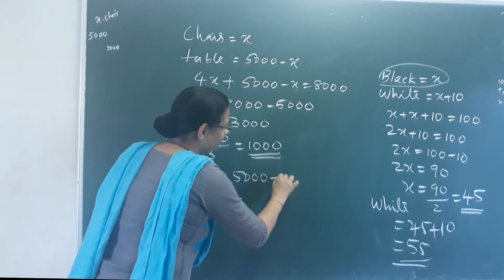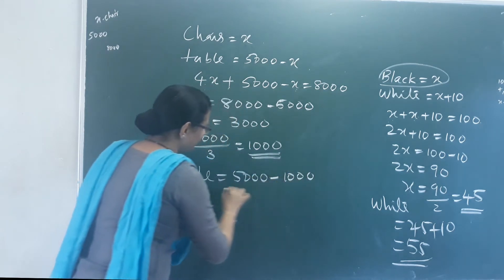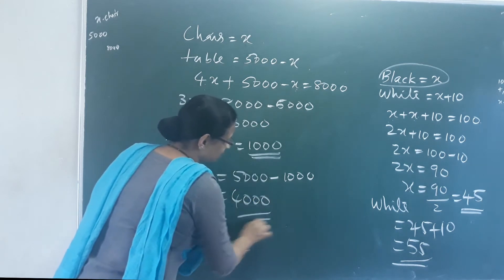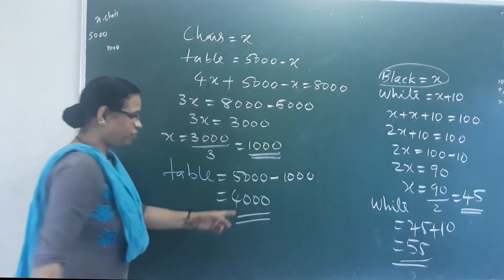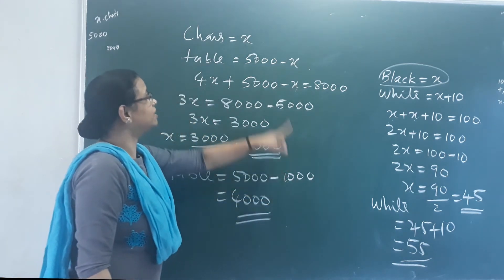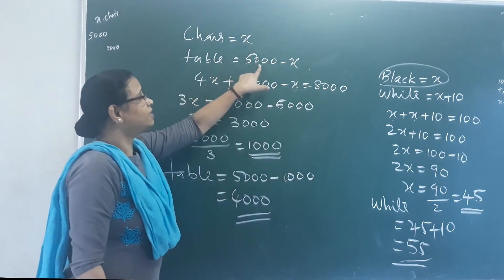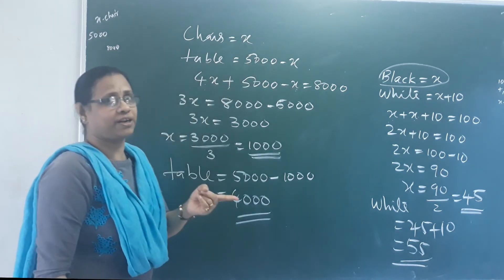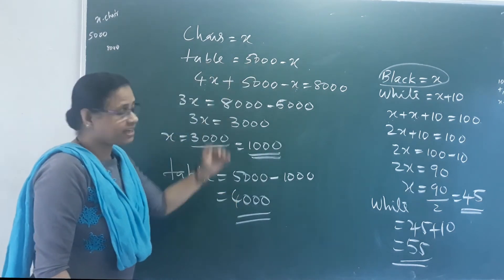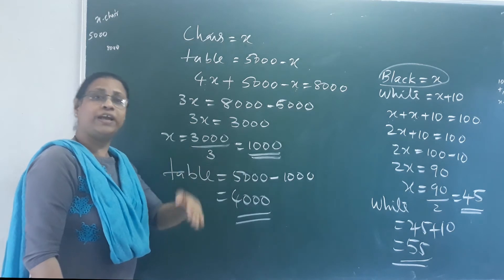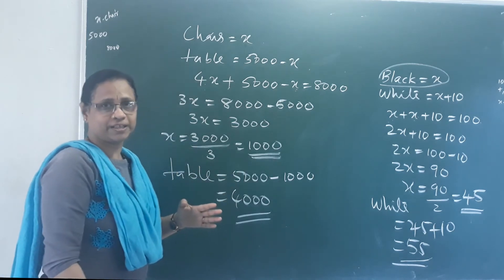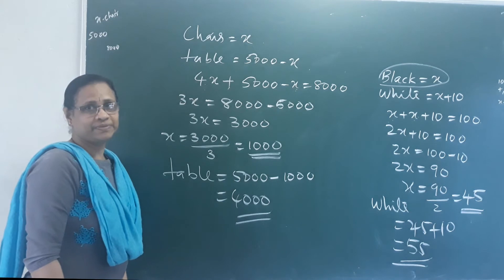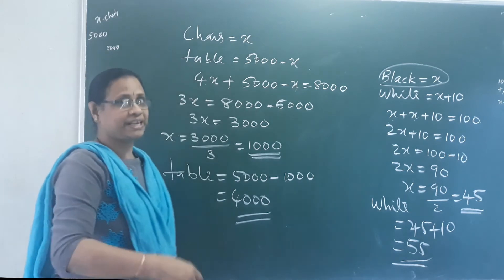You subtract 1,000, meaning the table price is 4,000. Table price is 4,000 and chair price is 1,000 — together 5,000. Now if you take 2 variables, that's the next section.